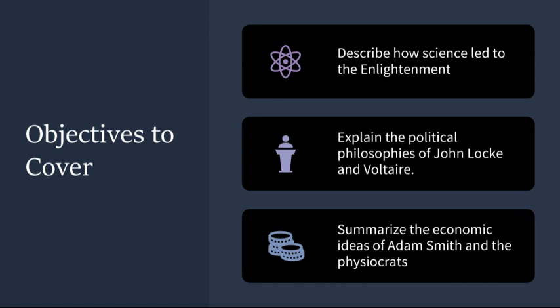In conclusion, let me just say that the Enlightenment was a period shaped by science, philosophy, and economic thought. Science laid the foundation for a rational worldview, while philosophers like John Locke and Voltaire championed ideas of individual rights and freedoms. Economists like Adam Smith and the physiocrats reshaped economic thinking, paving the way for modern capitalism. I look forward to seeing you all next week, and I look forward to hearing your questions and thoughts about these topics. Thank you.